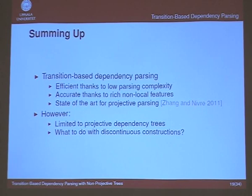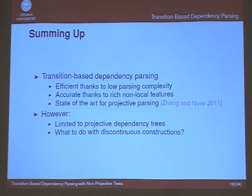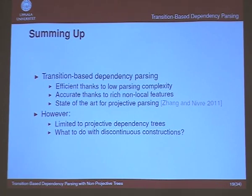Summing up so far: transition-based dependency parsing is efficient thanks to low parsing complexity, and can be relatively accurate thanks to rich non-local features unavailable in all other approaches. Especially when combined with global optimization, it can lead to state-of-the-art parsers. We had a paper at ACL this summer showing that for English with a projective dependency conversion of the Penn Treebank, this gives exactly the same accuracy as the best alternative approaches — roughly 93% unlabeled accuracy. However, everything so far is limited to projective dependency trees.